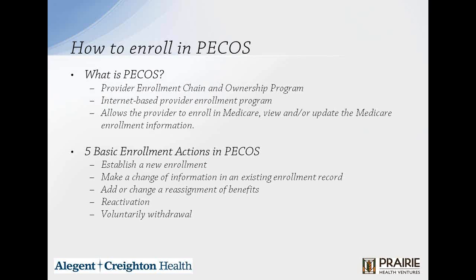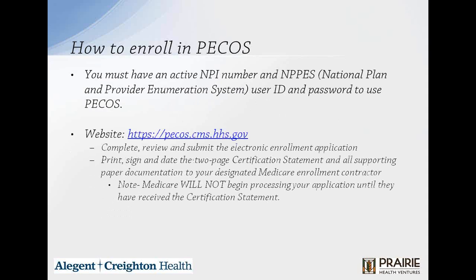You must have an active NPI number and NPPES user ID and password to use PECOS. You would complete, review, and submit your electronic enrollment application, then print, sign, and date the two-page certification statement and all supporting paper documentation to your designated Medicare contractor. Note that Medicare will not begin processing your application until they have received your certification statement, ideally within one week of electronic submission.